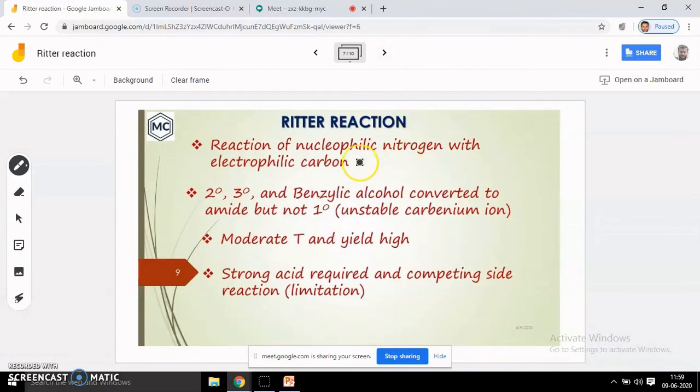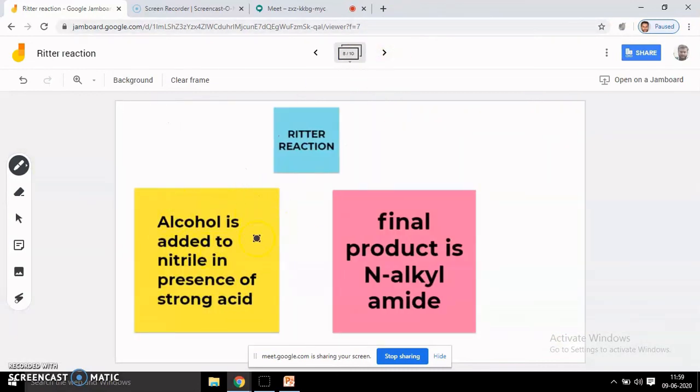Suppose you want to discuss like this using sticky notes. You can already make these sticky notes. Ritter reaction is a reaction between alcohol and nitrile in the presence of strong acid and our final product is N-alkyl amide. You can do like this also. I thought it might be useful for you when you are using Google Meet presentation in a live classroom. This Jamboard might be helpful for you.